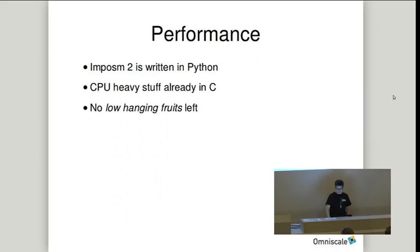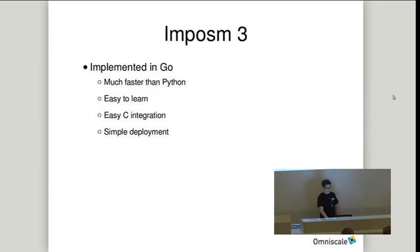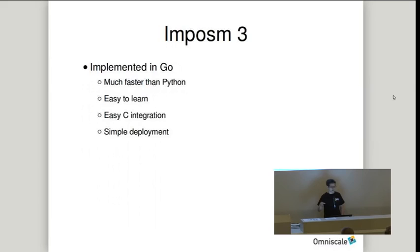So for Impossum 3 we had the idea to write it completely from scratch, while sharing most of the architecture to make the rewrite process as smooth as possible. Impossum 3 is now implemented in Go. It's faster than Python, quite easy to learn, easy to integrate with C — because we still need C libraries like GEOS for geometry handling — and it's easy to deploy.